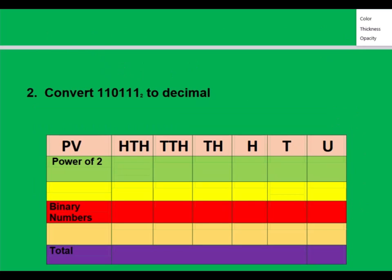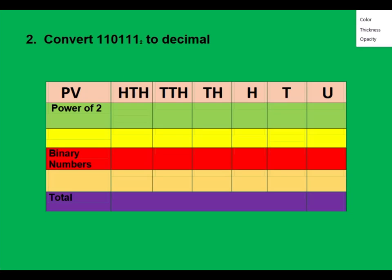Let's move to the next question. We have to convert 110111 base 2 to decimal. Write the numbers out spaciously: one, one, zero, one, one, and one. The next thing is to put the place values starting from zero: zero, one, two, three, four, and five.